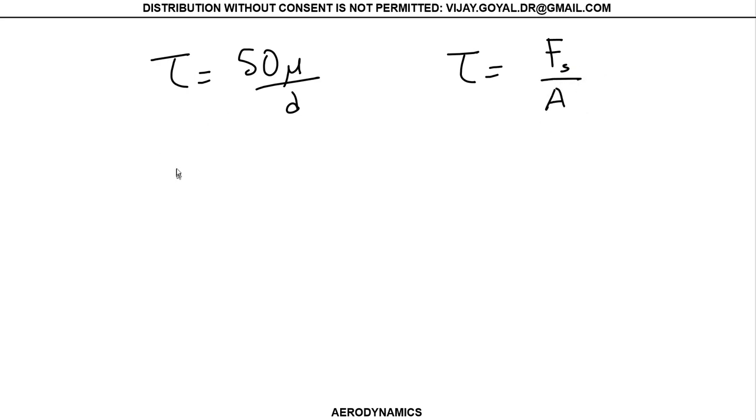Also, I know that my shear is nothing else than your shear force divided by area, which I also know in the problem. So this is actually equal to force divided by area equals 50μ/d. And from this equation, then I know that d can be solved and is equal to 50μ times area over my shear force.